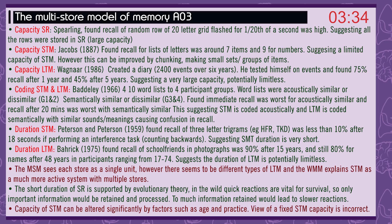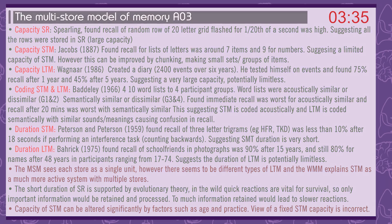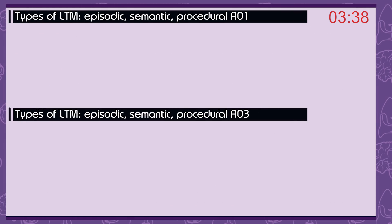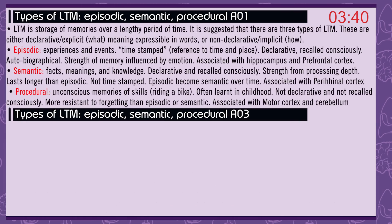Types of long-term memory: episodic, semantic, and procedural. Long-term memory is storage of memories over a lengthy period of time. It's suggested that there are three types of long-term memory. These are either declarative, or explicit — the 'what', meaning expressible in words — or non-declarative, or implicit — the 'how'.